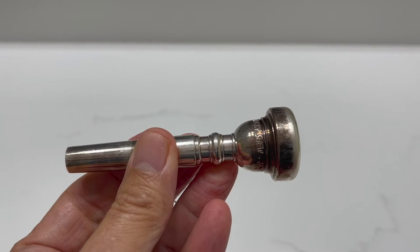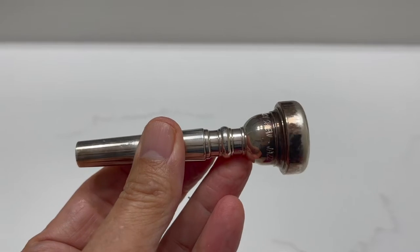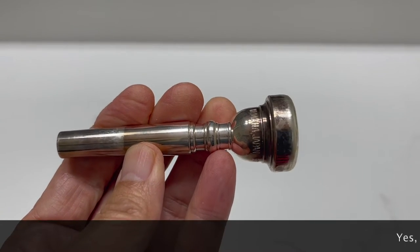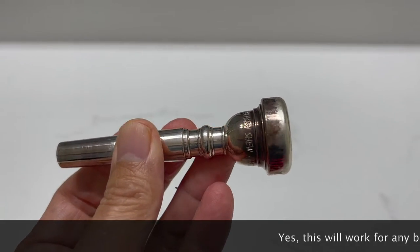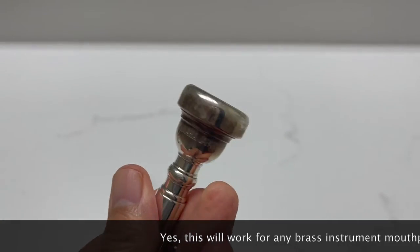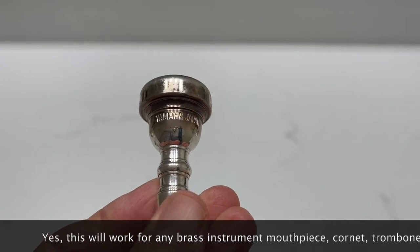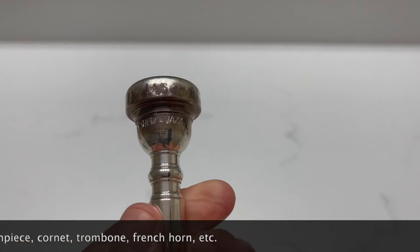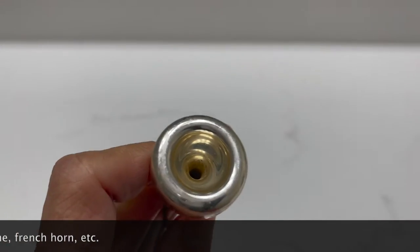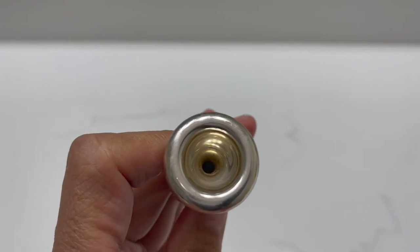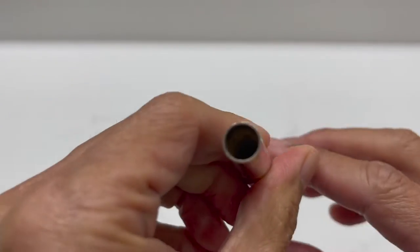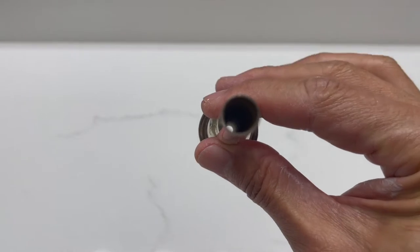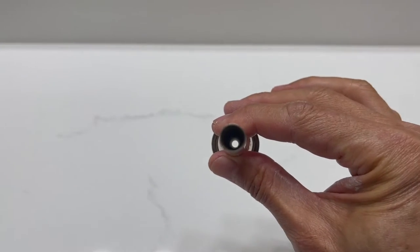We're going to learn how to clean a trumpet mouthpiece. You probably clean yours a lot more often than I do, but I wanted to make a point with this one. Make sure you all know this is a Yamaha Bobby Shue Jazz mouthpiece. You can even see the cup's a little discolored, and there's a darkness in that throat there.